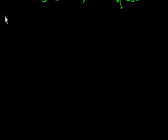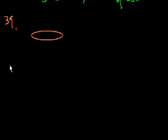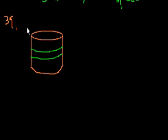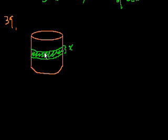Problem 39. A circular tub — they've drawn this circular looking tub with two sides and a bottom, and they shade in a strip around it. A circular tub has a band painted around its circumference as shown above. What is the surface area of the painted band? The height of the painted band is x. In order to know the surface area, you would need to know the height x times the circumference of the circle.